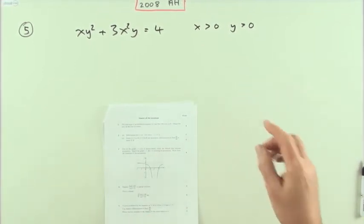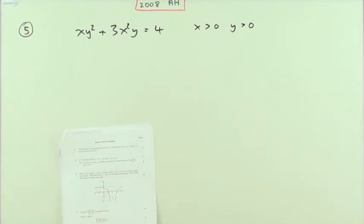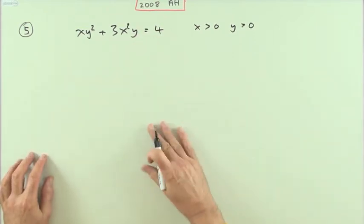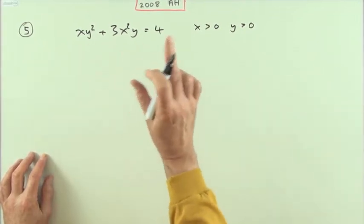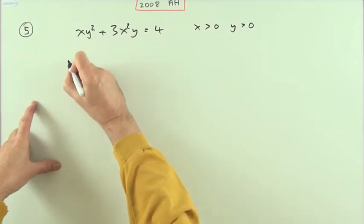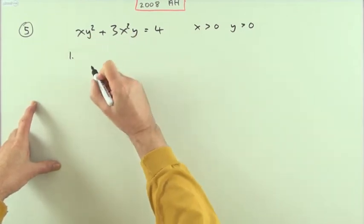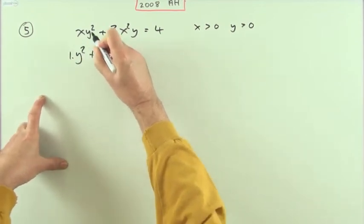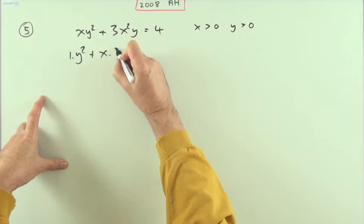First part, differentiate this. Fair enough, it's just the normal rules of differentiation using the product rule. So we differentiate the first in this particular term, so x will just go to one, I'll just put it down explicitly and leave that alone.